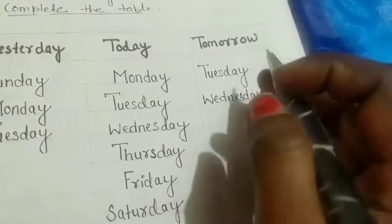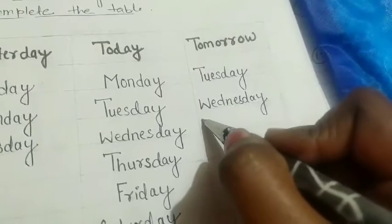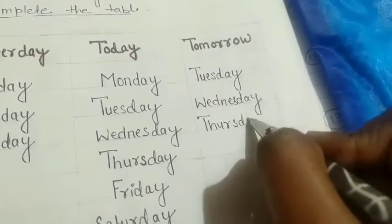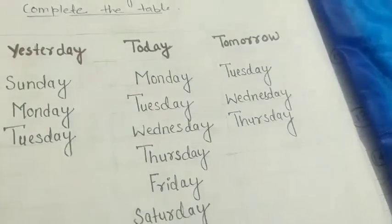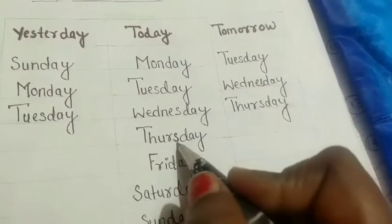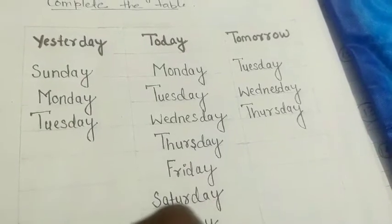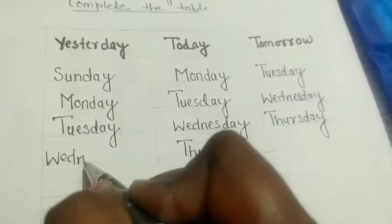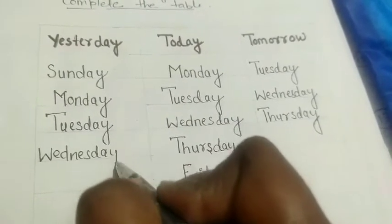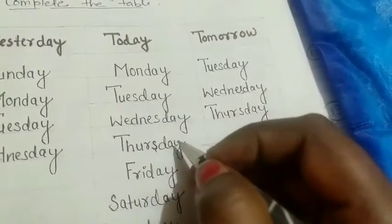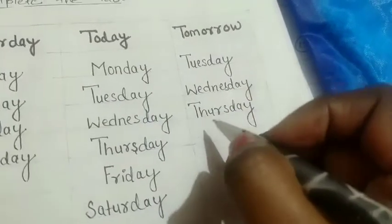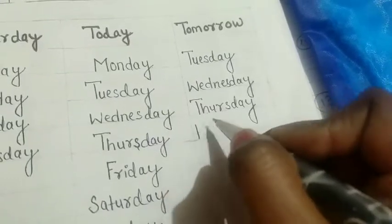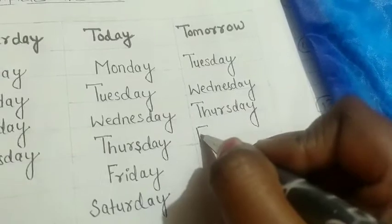Today is Wednesday, so yesterday was Tuesday. Write it here: Tuesday. Now next — today is Thursday, yesterday was Wednesday. Today is Thursday so tomorrow will be Friday.